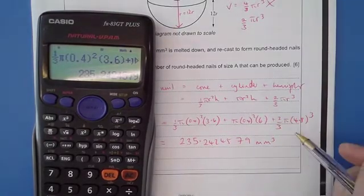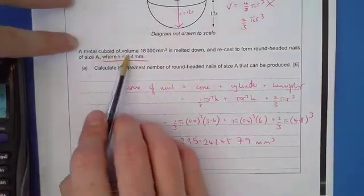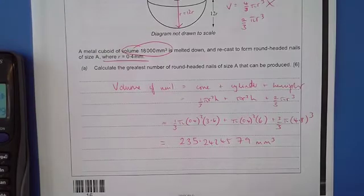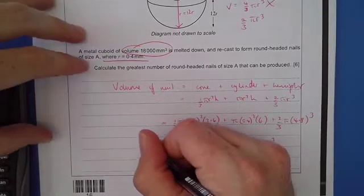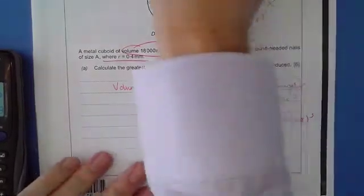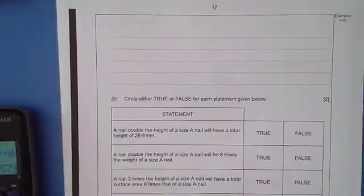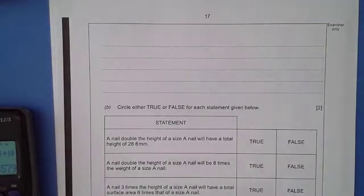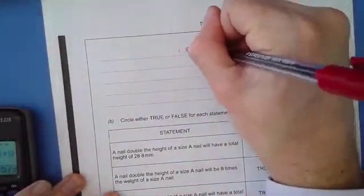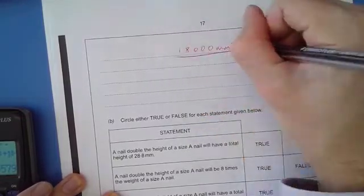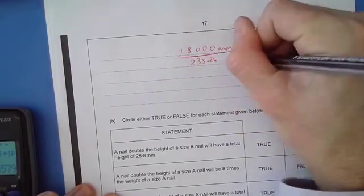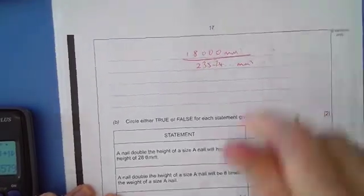There's a very particular reason why I've written it like that, and the reason is because I haven't finished the question. We're told that a metal cuboid of volume 18,000 millimeters cubed is melted down, and we know that one nail takes up that much of the volume. So what we need to do now on the next page is work out the number of nails going into it.